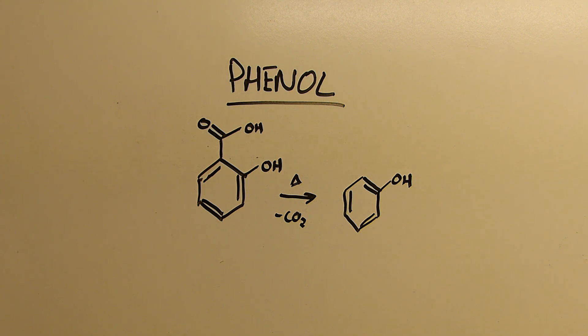But long story short, you can make this in about 75% yield if you do it on a large scale. You can make phenol in 75% yield from salicylic acid.